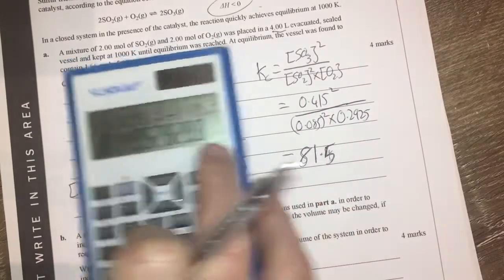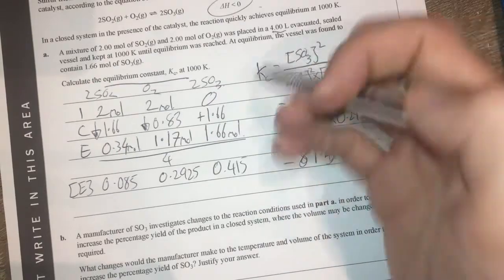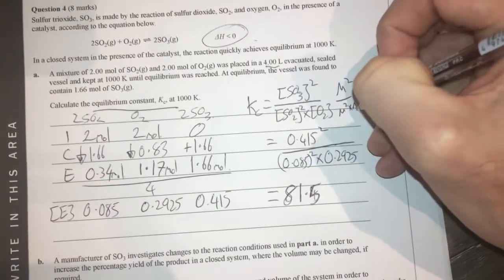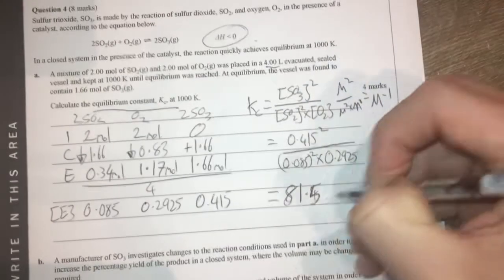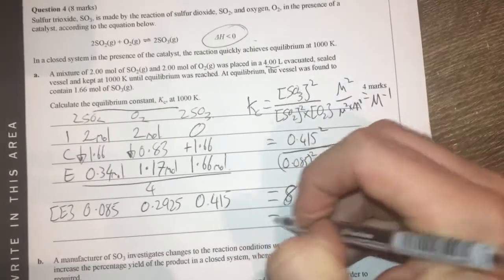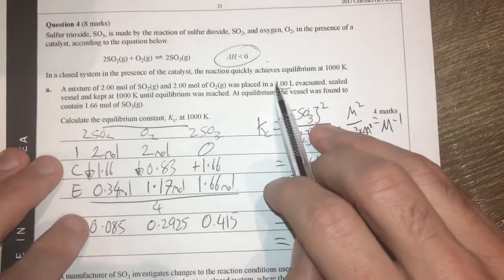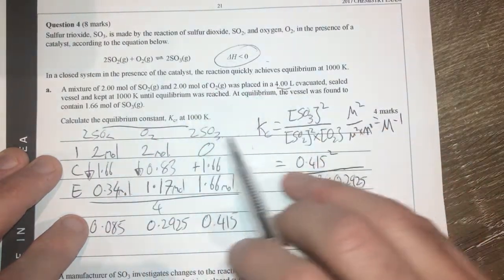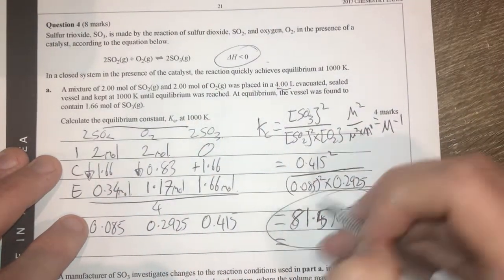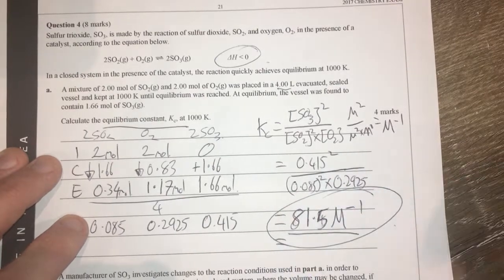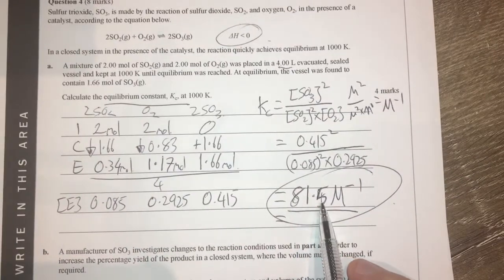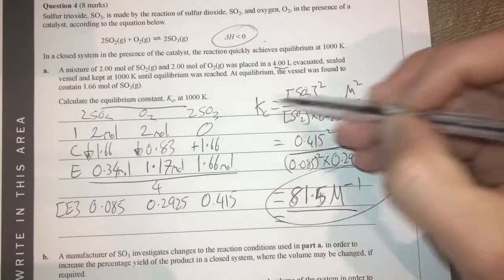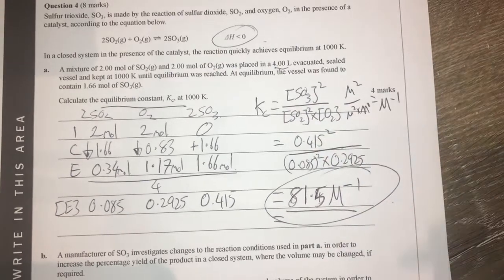I'm going to go back and look at my significant figures in a second here. So 81.5 and what have we got? Units for this. Molar squared divided by molar squared times molar equals molar to the negative one. Significant figures, I've got three, three, three, three. Three significant figures across the board, so that means that is my answer. I've got three significant figures: one, two, three. So therefore my answer is 81.5 molar to the negative one. Remembering I also think about the units when I do equilibrium constant calculations as well.